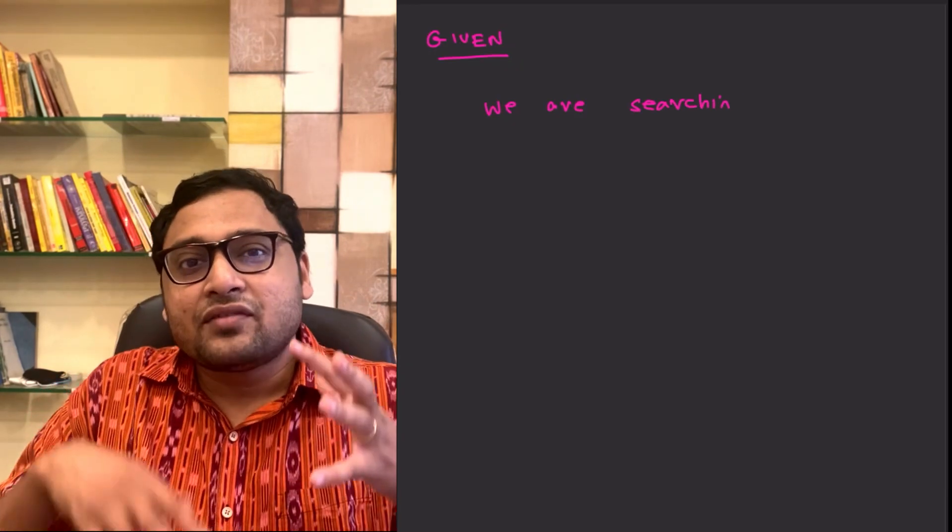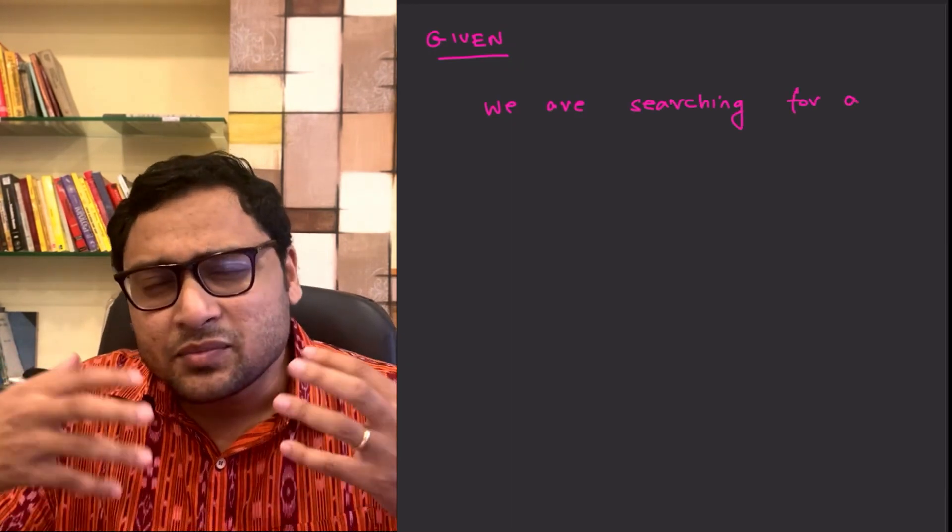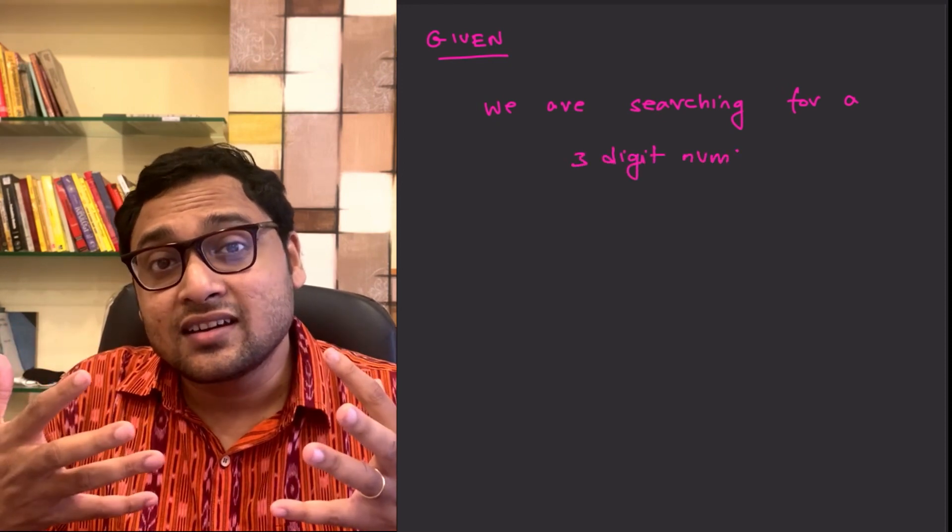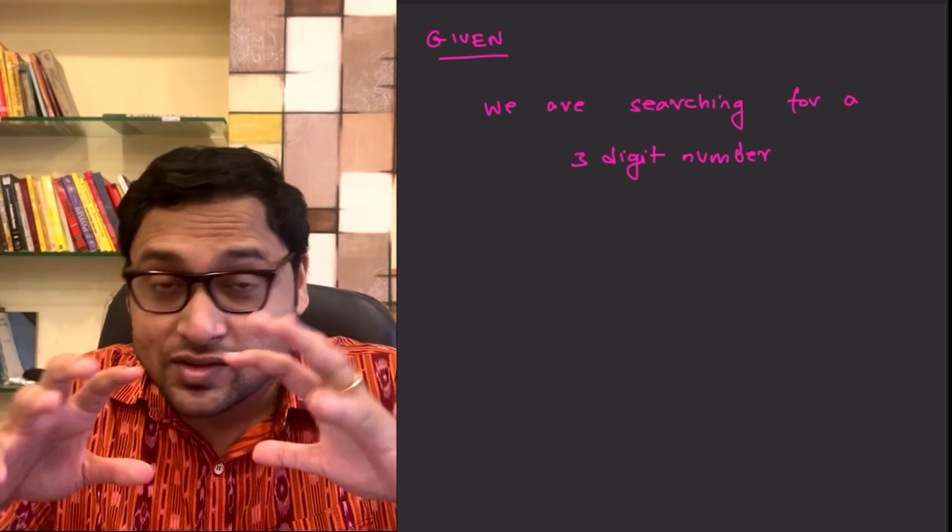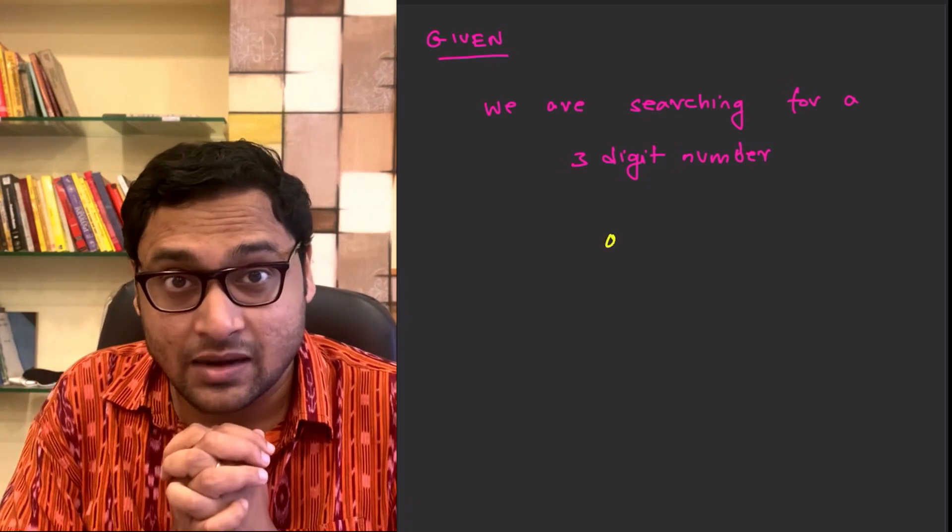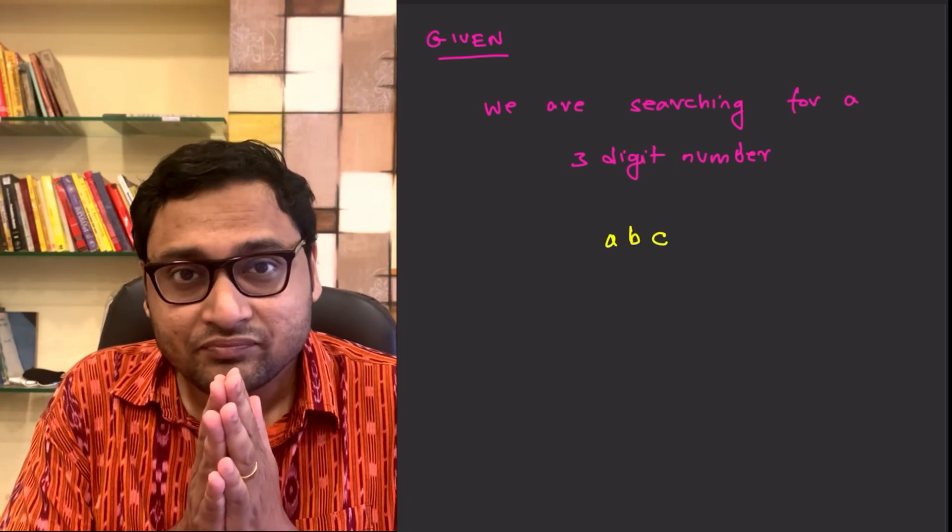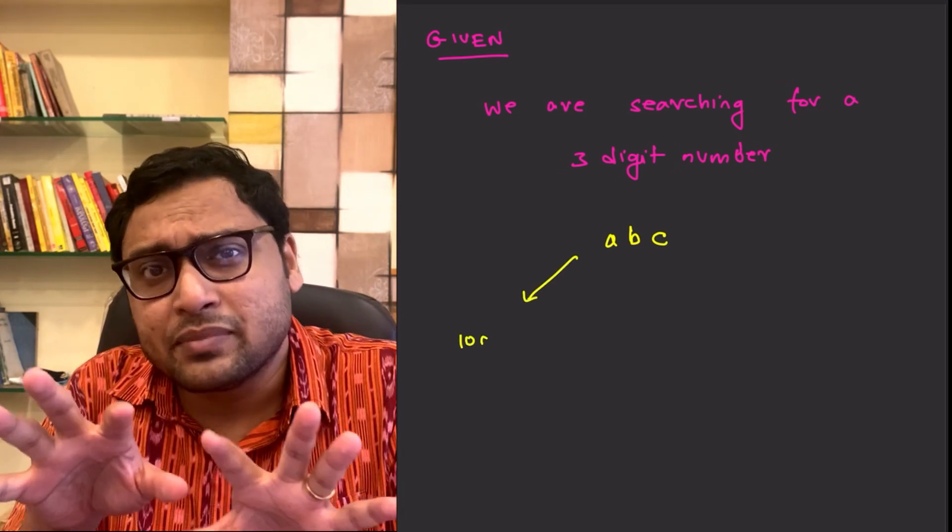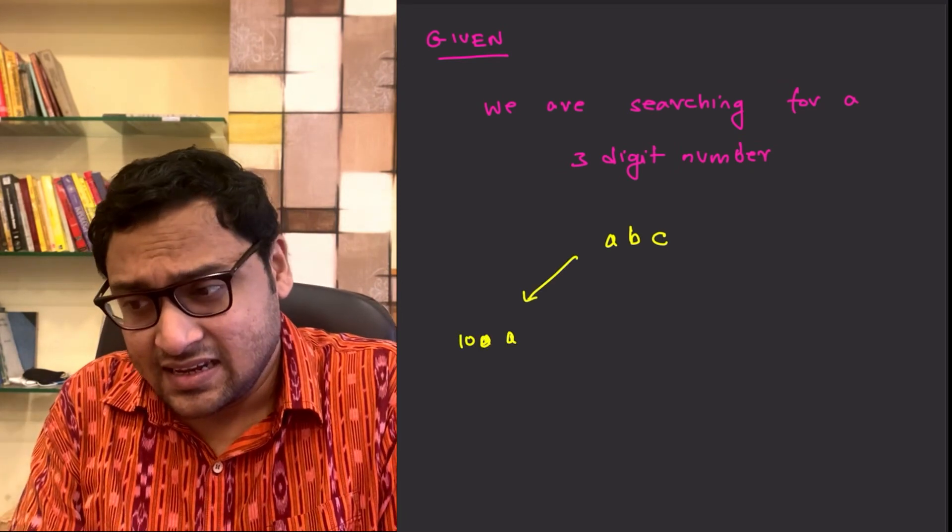It says that we have a three-digit number. Let's suppose it's ABC. And we are searching for that number. Now, certain facts are given about this number. For example, if the number is ABC, of course, we can write it as 100A plus 10B plus C.